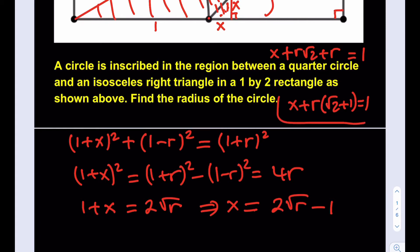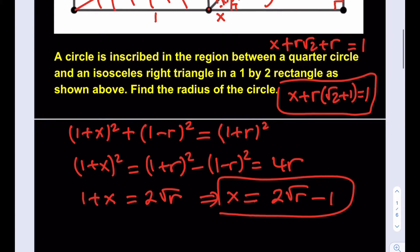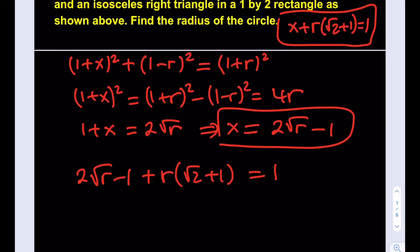I'm going to use both equations together and substitute x into the first equation: x equals 2√r minus 1, so plugging in gives 2√r − 1 + r(√2 + 1) = 1. To solve this, I'll isolate the radical: 2√r equals 2 minus r(√2 + 1), by adding 1 to both sides and subtracting the r term.